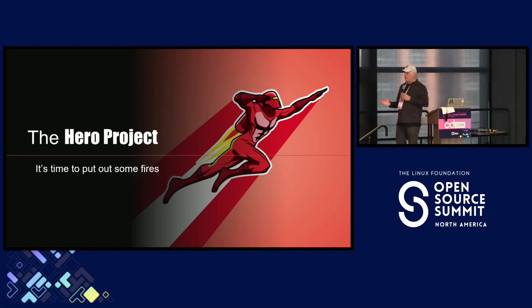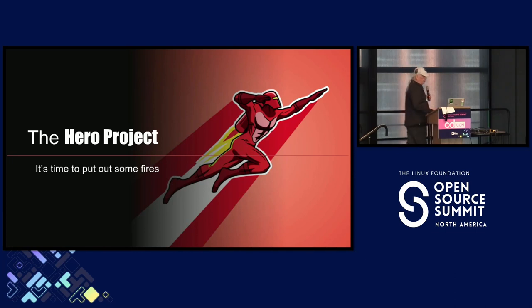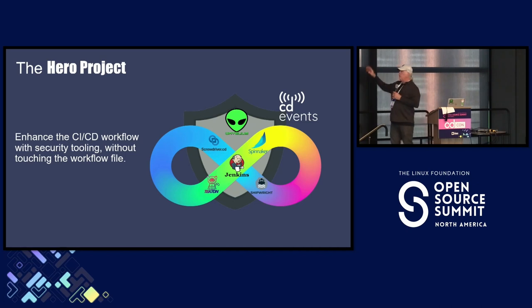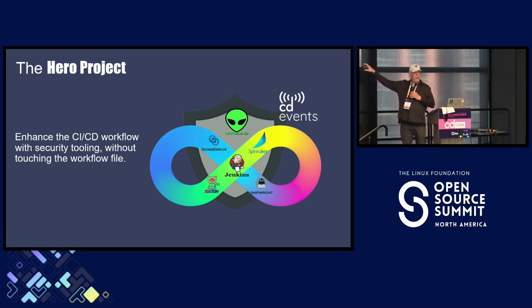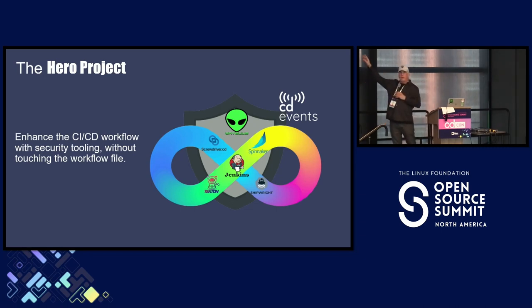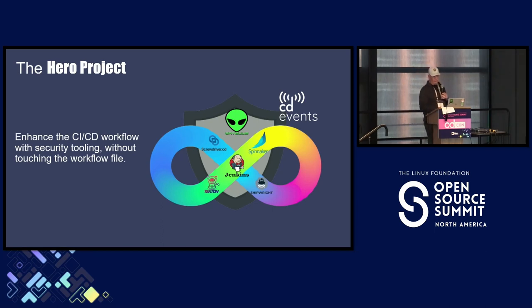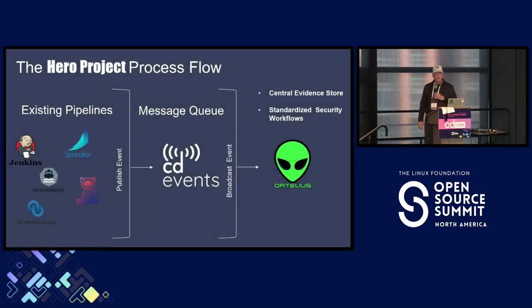From the Ortelius side, we're in the process of creating what we call the Hero Project — and we're going to put out some fires here. Basically we want to take CD Events, Ortelius, and the CI/CD tools and start linking them together. These pieces have been done individually — there's a CD Events plugin for Jenkins, Spinnaker has a CD Events plugin, Ortelius is out there grabbing this information. We're going to plumb it all together — that's what the Hero Project is about. On the CD Events side, they did some small POCs to make sure the idea was working; we're going to build upon those and really take it to the next level.